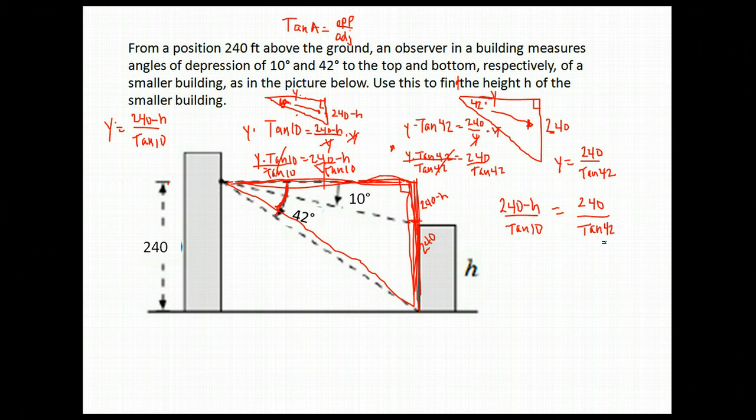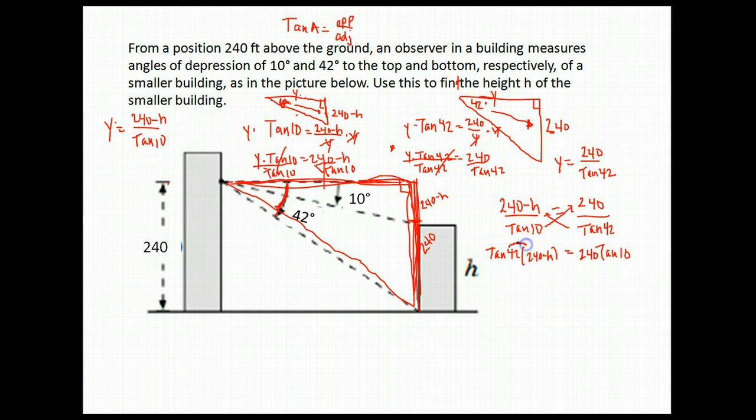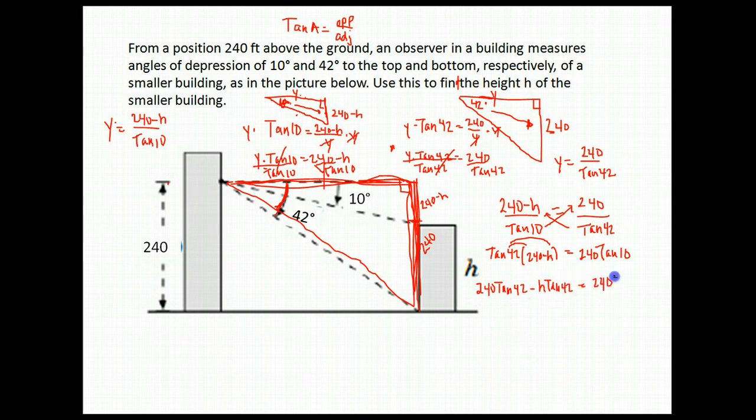Our job here is to solve for h. I have two equivalent fractions, so we can cross multiply. That gives me the tangent of 42 times 240 minus h equals 240 times the tangent of 10. I'm going to distribute here to remove the parenthesis. That gives me 240 times the tangent of 42 minus h times the tangent of 42 equals 240 times the tangent of 10.